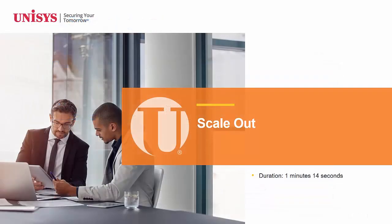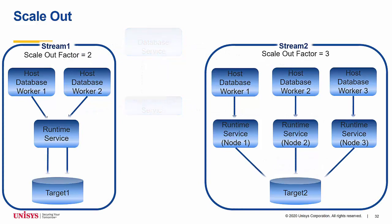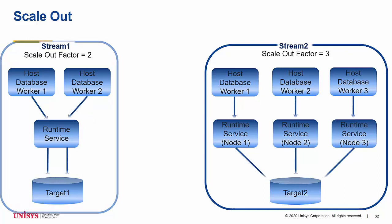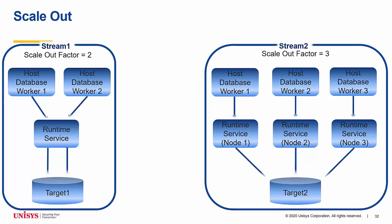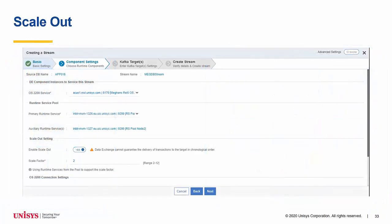Scale out. Scale out enables users to split the workload of a stream. With scale out, transactions need to be independent as they will not be applied in chronological order to the targets. The scale out feature is available with one or more runtime services. If you have multiple runtime services, they need to all use the same tracking database and be of the same release level. If using scale out on a single runtime service, the workload is shared via multiple threads. Scale out environments are supported by runtime service failover functionality. It is important to note that the scale out functionality is only available during changed data transformation. Scale out is defined when creating a stream that has yet to run CDT, and a stream's scale out details cannot be changed once the stream has been created.